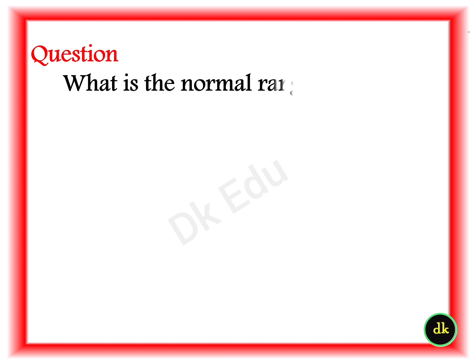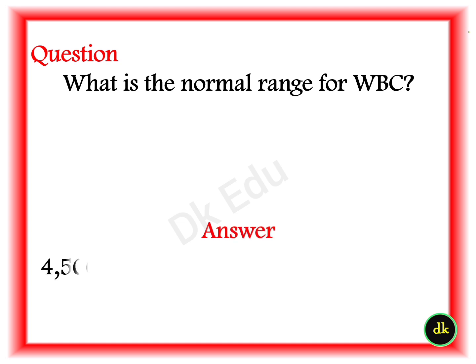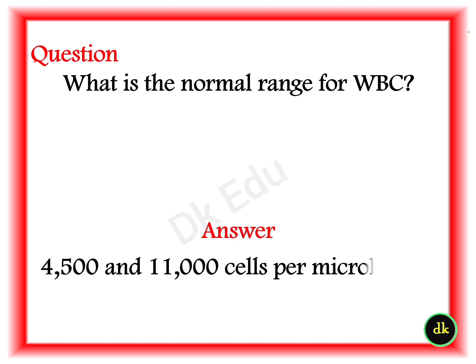Q: What is the normal range for WBC? A: 4,500 to 11,000 cells per microliter of blood.